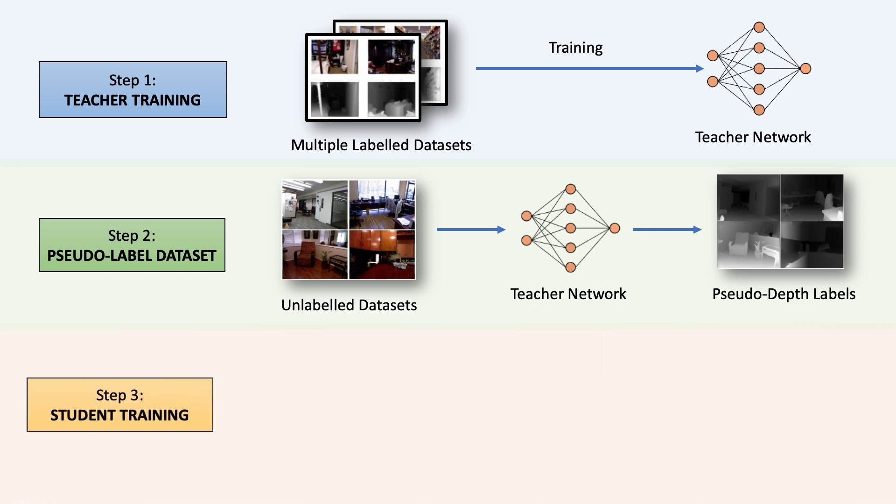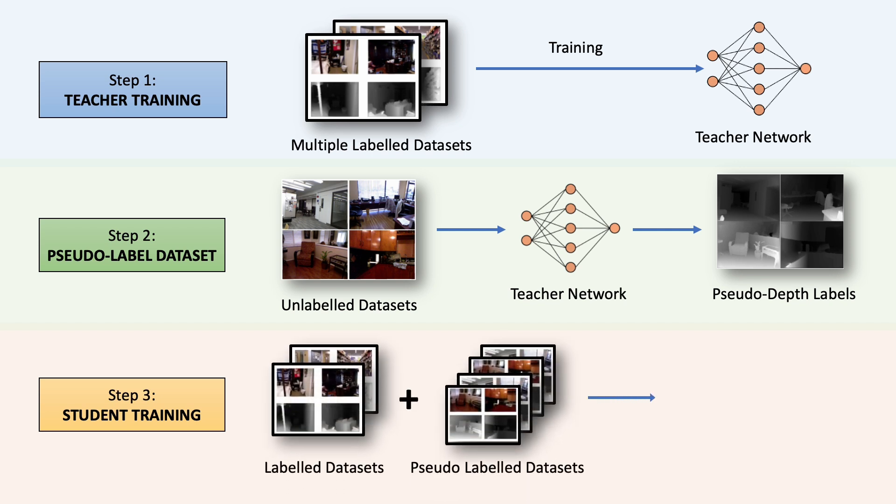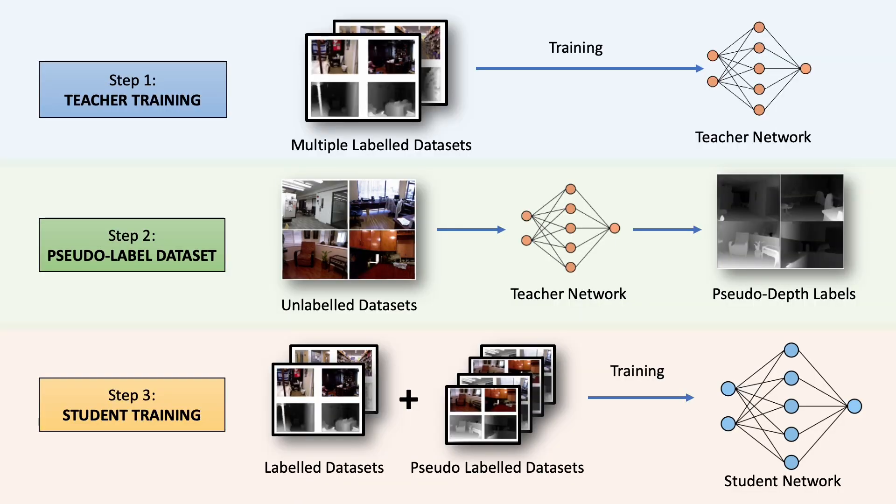In the final step, another neural network called the student network is trained on a combination of the original labeled datasets and these new pseudo-labeled datasets. Simply training a new network on labels annotated by another neural network won't really surpass the original model — the student network's performance will always be limited by the teacher network's ability. We'll soon discuss the innovative tricks used to generalize student training so it learns to outperform the base teacher model. But first, let's zoom in on each part of this pipeline starting with the teacher model.